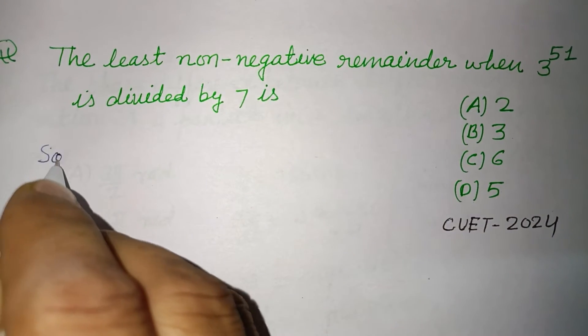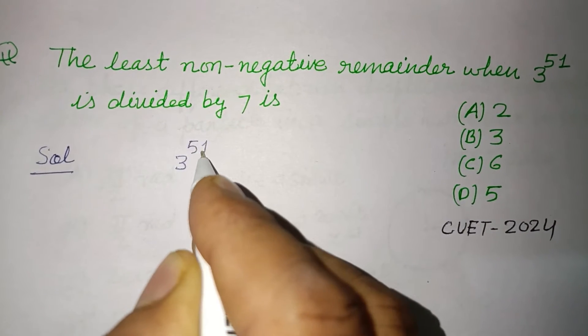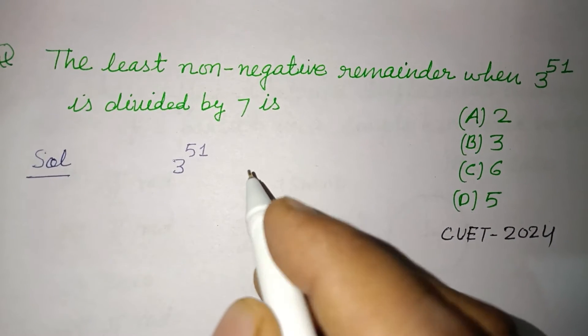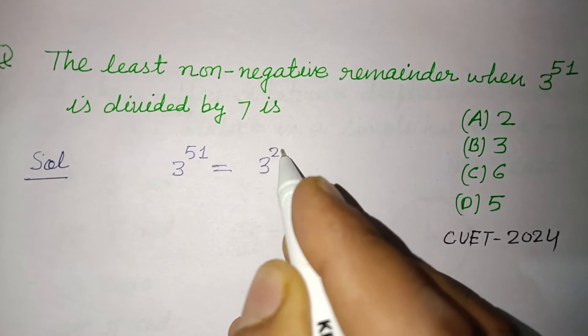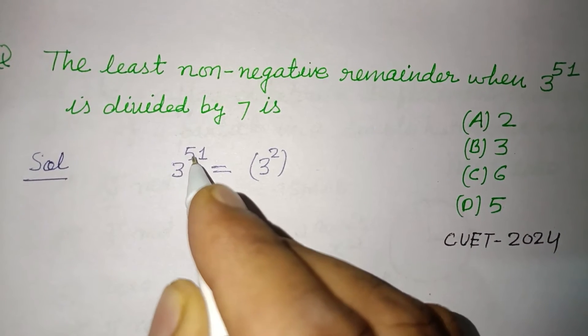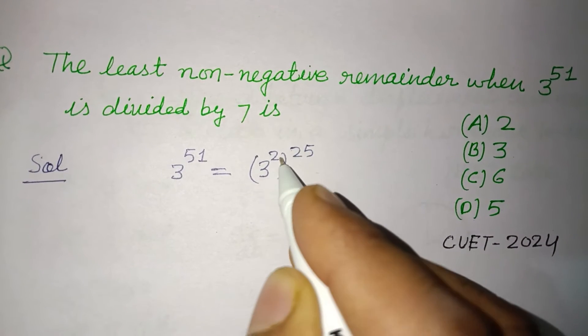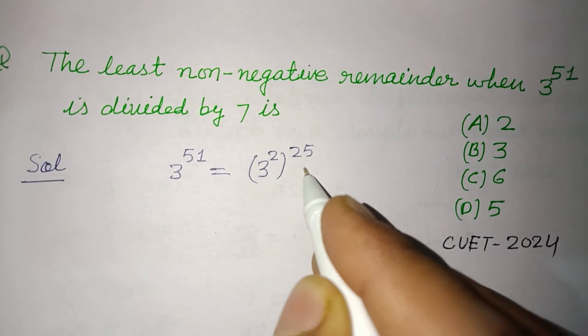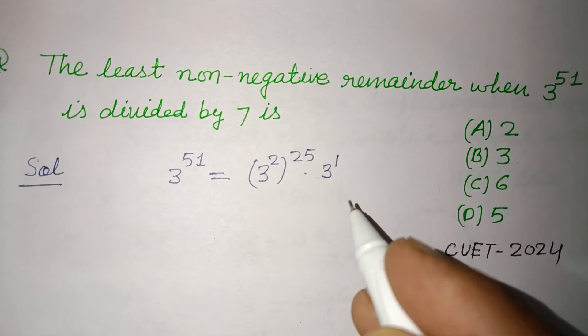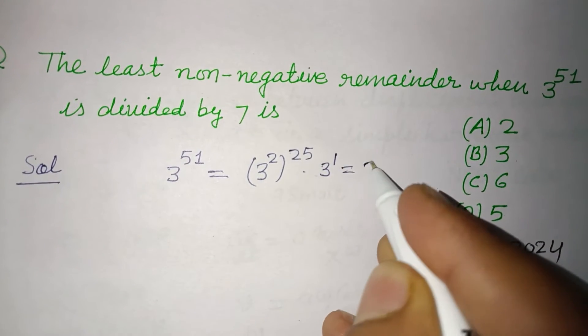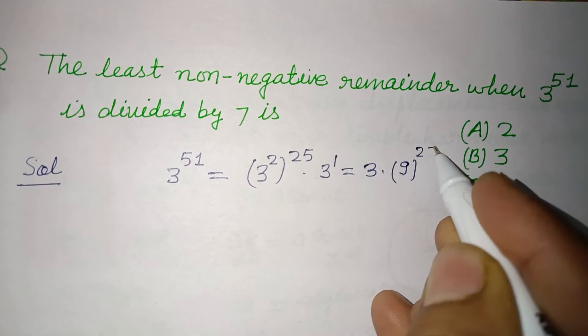So students, here 3^51 is given. We can write it as (3^2)^25 times 3^1, since when we divide 51 by 2, we get 25 with remainder 1. This equals 3 times 9^25.